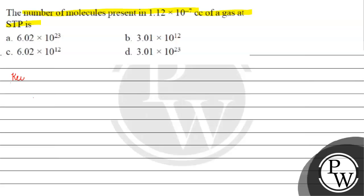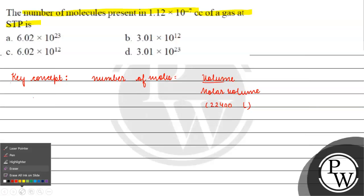The key concept for this question is number of moles is basically equals to volume by molar volume which is 22,400 milliliters at STP.